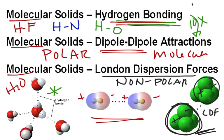So polar could be hydrogen bonding, if it's HF, HN, or HO bonded together. Other polar molecules will fall in the dipole-dipole attractions, and if they're non-polar molecules, they'll be there in the London dispersions.